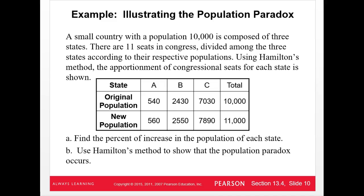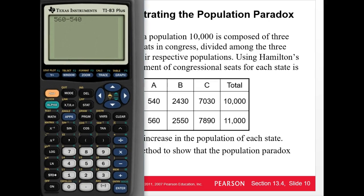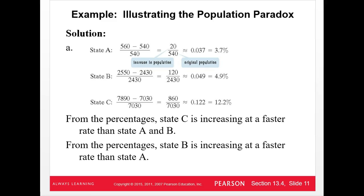Here's an example. We have a population of 10,000 people divided among states A, B, and C. State A grew from 540 to 560, B grew from 2,430 to 2,550, and C grew from 7,030 to 7,890 over the same time period. The first thing we want to do is find the percent increase for each population: take the change between old and new, divide by the original, and multiply by 100. For A, that's (560 − 540) / 540 × 100, which is about 3.7%. Doing this for all three states, we find that C grew the fastest.